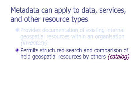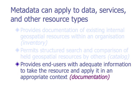The catalog view allows for structured search based on fields like title, abstract, bounding coordinates, and things like that. A third level of detail in metadata would be what we'll call proper documentation. It allows end users enough information to actually take the resource — the data set or the service — and use it in an appropriate way. Without this level of metadata, it's very hard for an end user to do the right thing or even locate information.